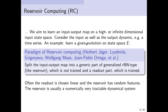The paradigm of reservoir computing says: you have this map from U to output Y. Reservoir computing maps U to an intermediate output — the reservoir — and on the reservoir it suffices to run a regression to learn in an exhaustive way the dynamics of this input-output system. In mathematical terms, we split the input-output map into a generic part of recurrent-neural-network type — the reservoir, which is not trained — and a readout part which is trained. Often the readout is chosen linear, and the reservoir has random features and is a very tractable dynamical system.